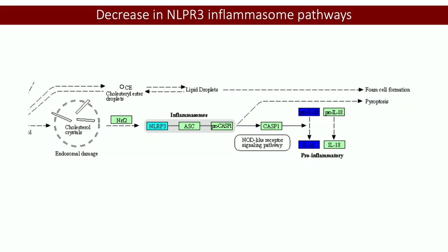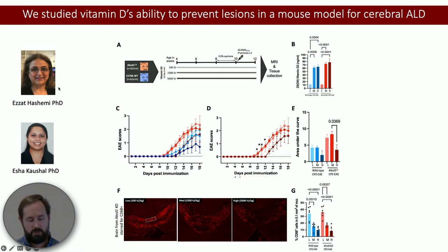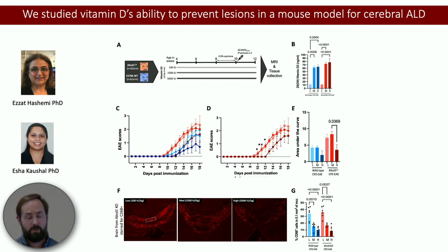One of the key pathways we'd like to use going forward is our new mouse model for cerebral ALD. At previous ALD meetings we've shown this model, which we think is a really promising new mouse model. It combines a couple of models from the MS world with the ALD mouse and seems to produce a result that looks like a pretty good mimic for cerebral ALD. We're quite pleased with its potential for understanding cerebral ALD pathogenesis and for developing therapies for clinical trials.